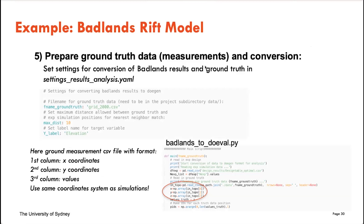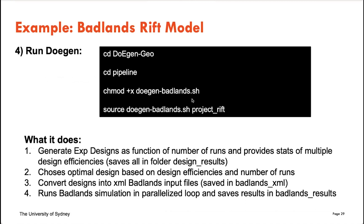As a brief example: running 48 badlands experiments through this shell script took 68 minutes on a powerful MacBook. It can still take a little while, but the idea is to save a lot of time — by using DoEgen we've created an optimal set of experiments to test rather than running through a full factorial, which could have the computer running for years.